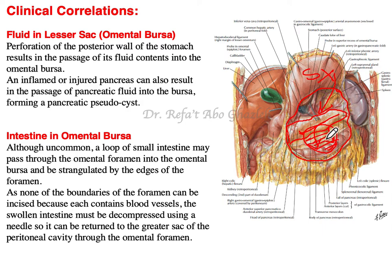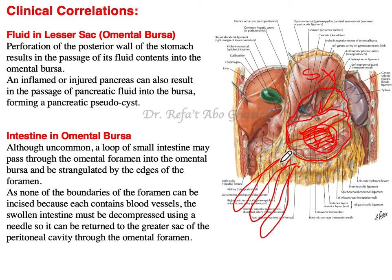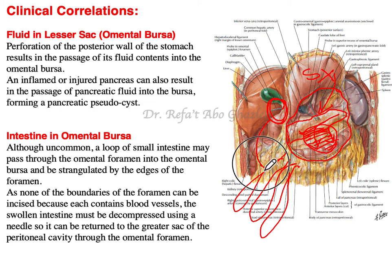Pancreatic fluid entering the lesser sac can create a cyst known as a pancreatic pseudocyst, which can be detected using CT imaging. There is also another situation related to the lesser sac — although rare — in which loops of small intestine can pass through the epiploic foramen into the lesser sac and become strangulated at the foramen.